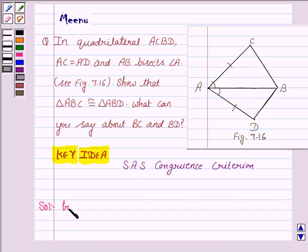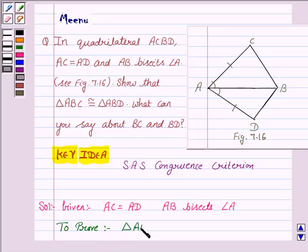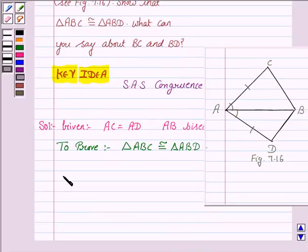We are given AC is equal to AD and AB bisects angle A. And we have to prove triangle ABC is congruent to triangle ABD. Let's now start the proof.